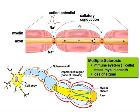In MS, the immune system's T-cells attack the myelin sheath, causing a loss of signal. It also causes false communications — because there are so many false communications, the threshold potential is no longer recognized and communication is lost.